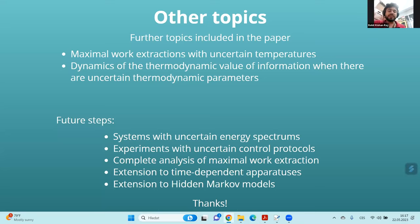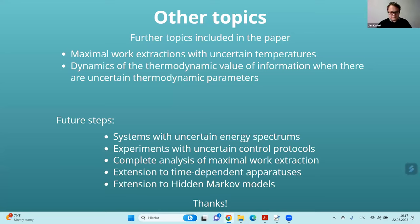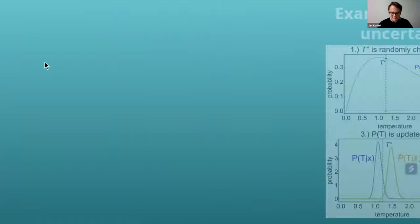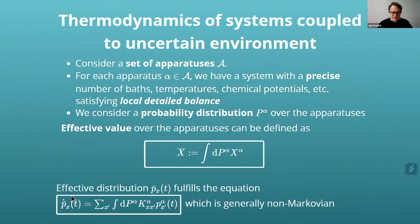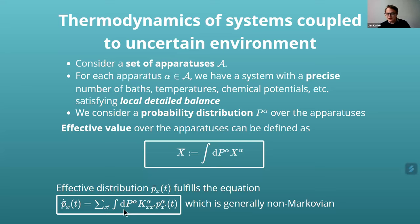Audience question (Rohit): I didn't understand how you got the non-Markovian feature through averaging at the beginning. Reply: If the equation were Markovian, the right-hand side would have some rate matrix times the average distribution. Unfortunately, you cannot decouple this integral into the product of a rate matrix times the average distribution — simply put, the integral of a product is not the product of integrals. That's why you get this non-Markovianity in general.